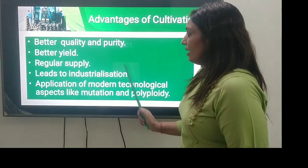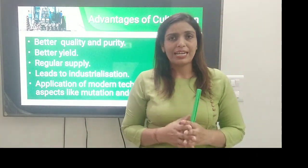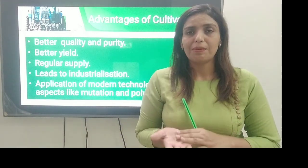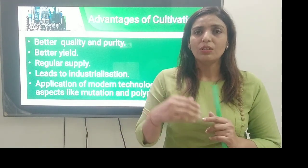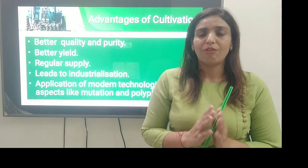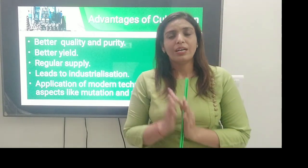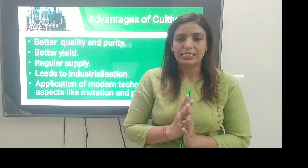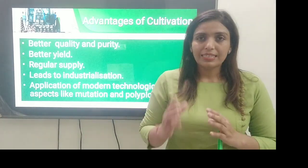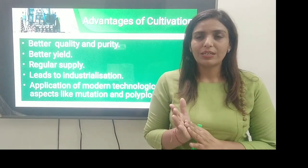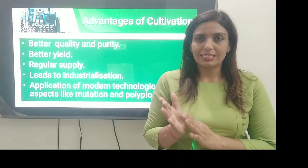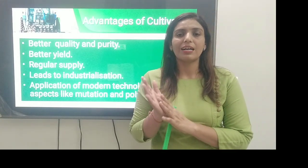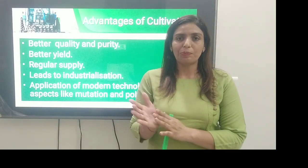Next क्या है — leads to industrialization. बहुत सारे ऐसे medicinal plants और aromatic plants हैं जिनको हम industry में भी use कर रहे हैं. For example, cocoa और coffee को बहुत सारे small scale industries में use किया जा रहा है. इसी तरह जो cinchona alkaloids हैं उनकी factory है Darjeeling के अंदर, और opium की factory है Ghazipur, UP के अंदर.